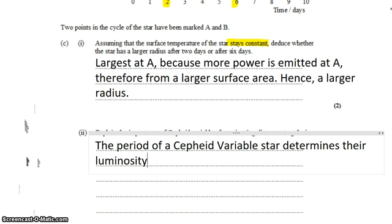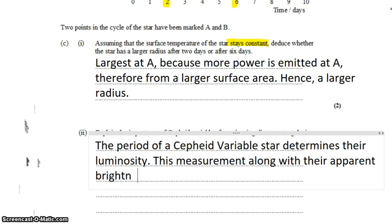There's a relationship between them. We can use their period to calculate their luminosity. This measurement, along with their apparent brightness, can be done from Earth.